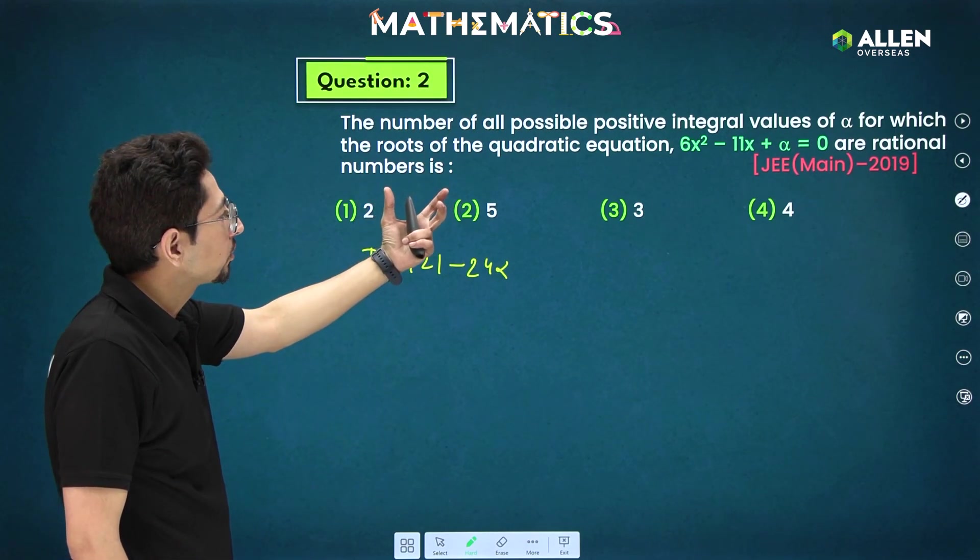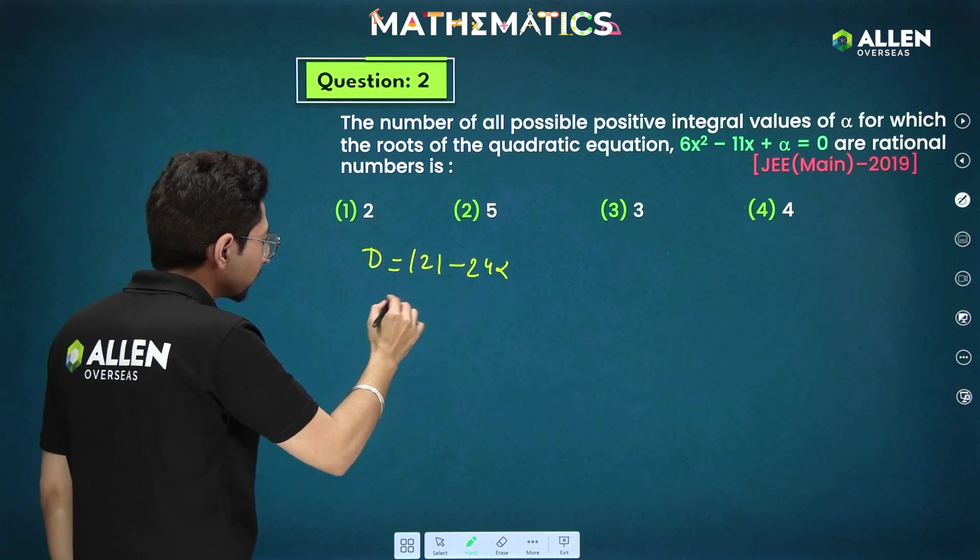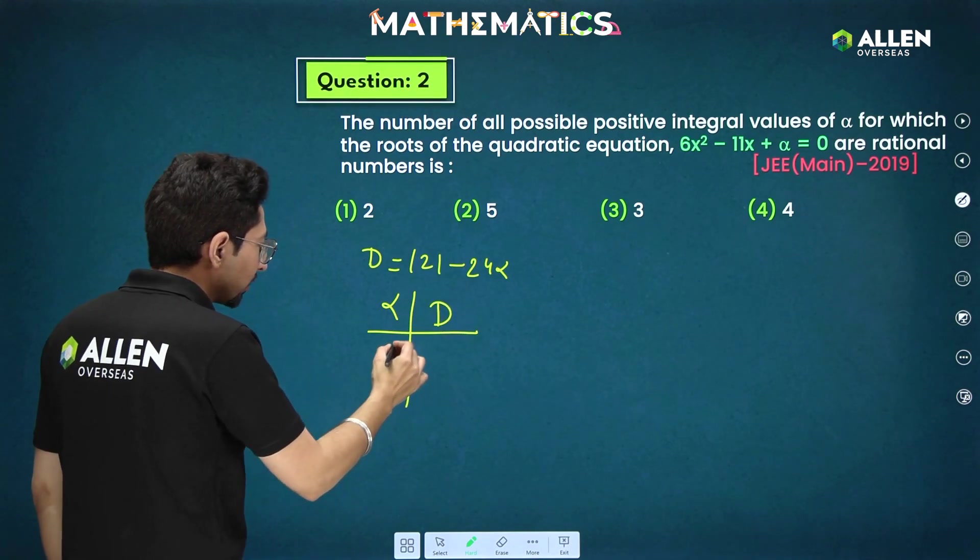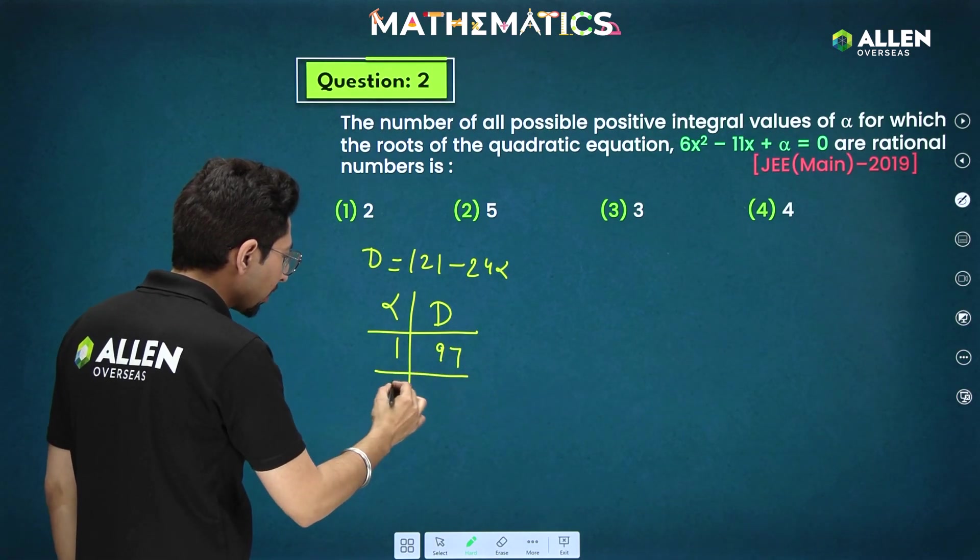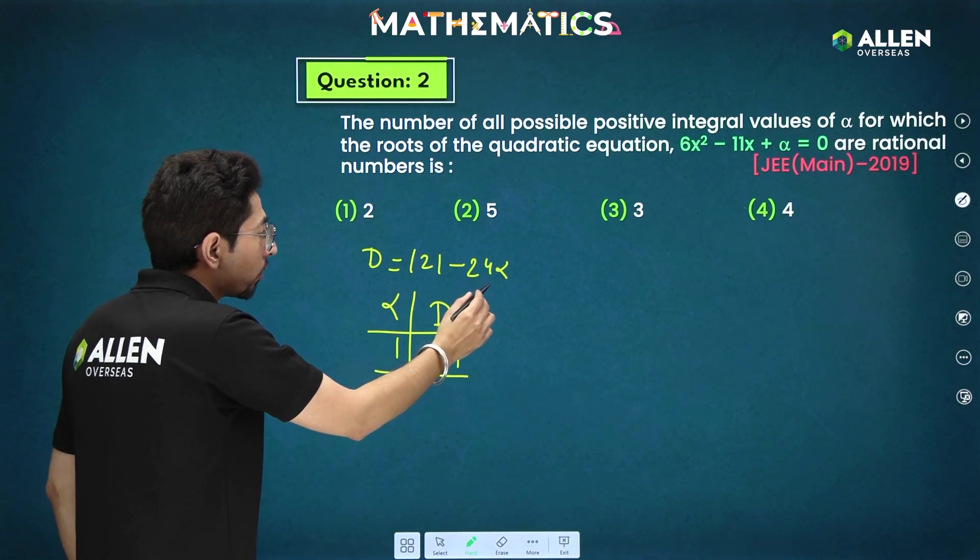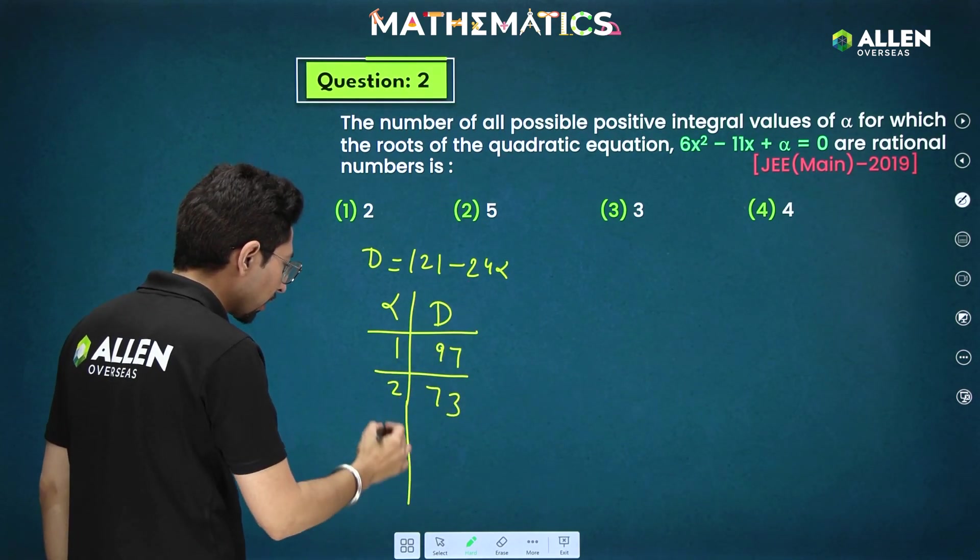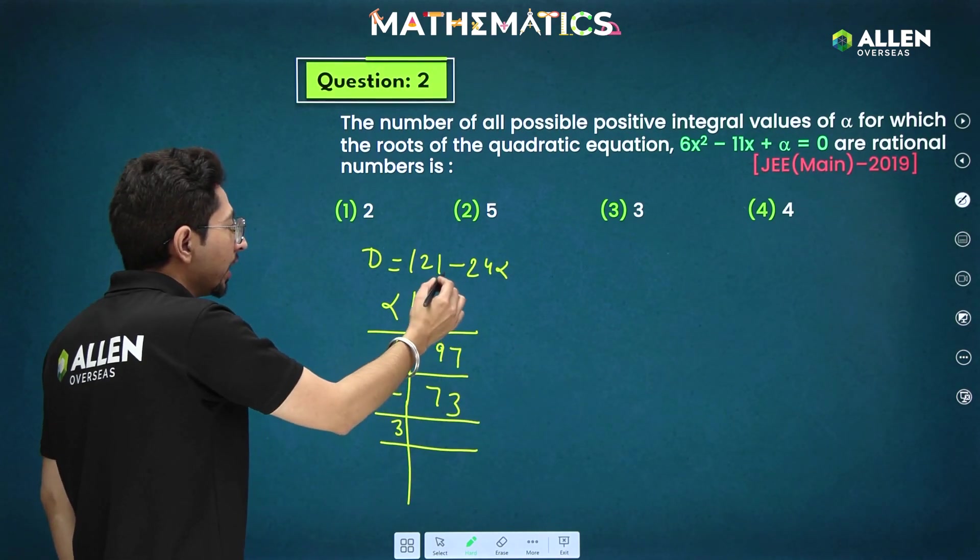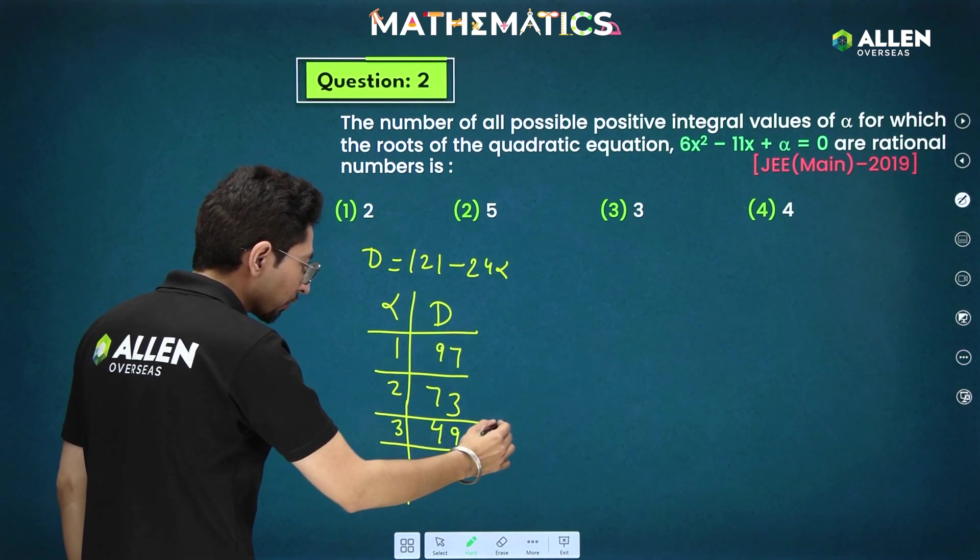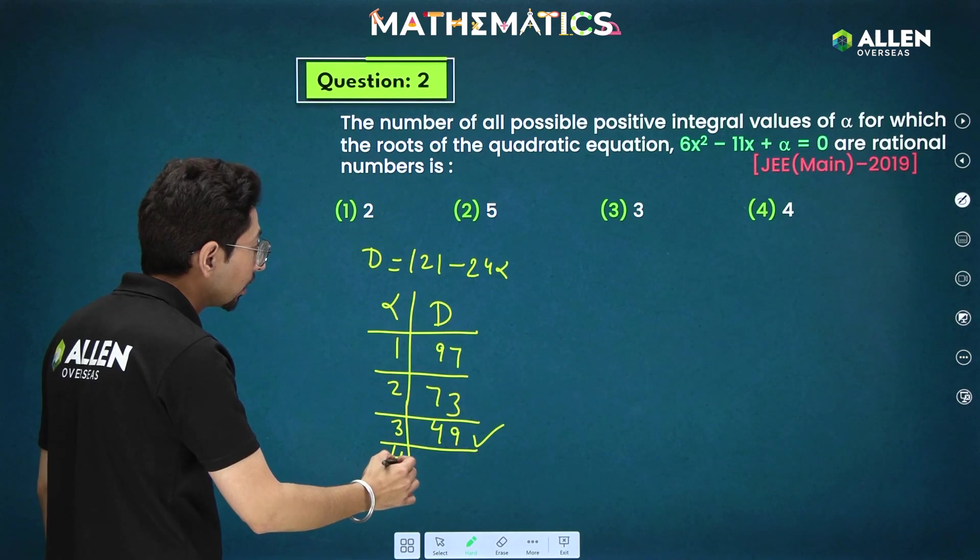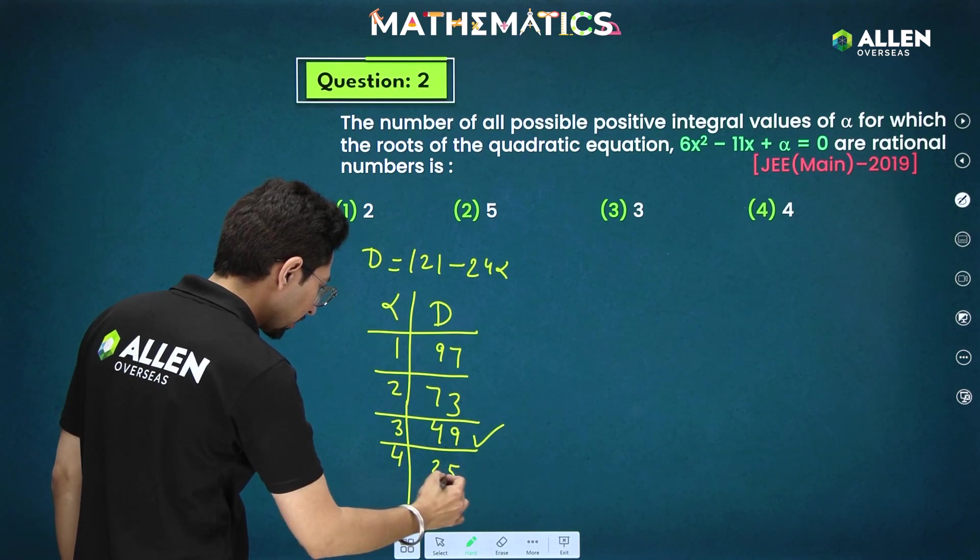Now, for different values of alpha, we have to check for which we are getting perfect square of discriminant. So, let's take different values. If alpha is 1, what will be? 121 - 24, that will be 97. Not a perfect square. For alpha 2, 121 - 48. That will be your 73. Again, not a perfect square. For 3, 121 - 72. That will be 49. So, this is the perfect square. Similarly, when we put alpha 4, that will be 121 - 96. That is 25.